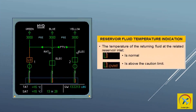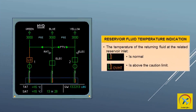Reservoir fluid temperature indication shows nothing if the temperature of the returning fluid at the related reservoir inlet is normal. Whereas it shows amber overheat if the temperature of the returning fluid at the related reservoir inlet is above the caution limit.